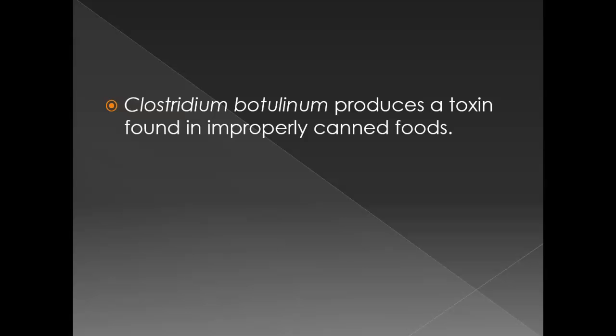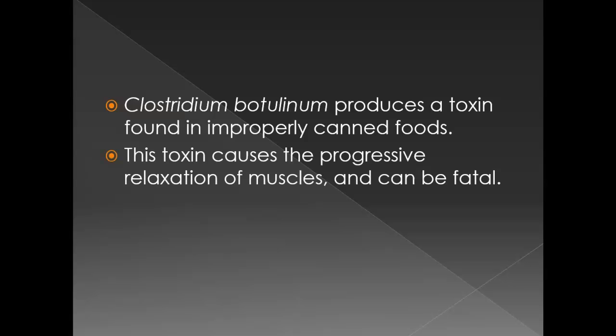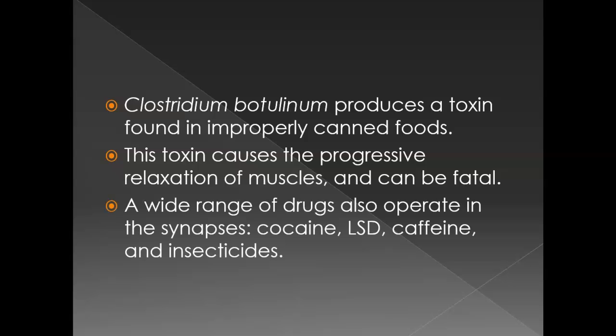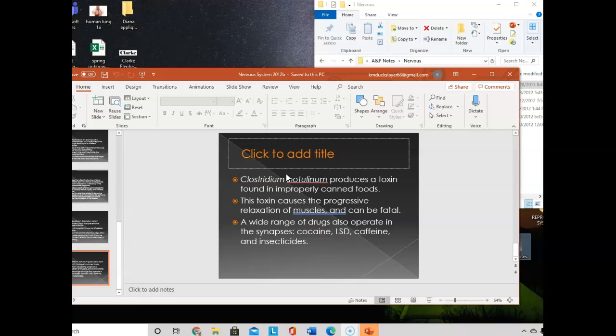Its cousin, Clostridium botulinum, produces a toxin that goes in and prevents the release of acetylcholine. If you can't release that, you can't get muscles to contract. This is found in foods and gets into the body, affecting the smooth muscles of the stomach and intestines. The muscles can't work and can't move food through the intestinal system, and then bad things happen. Other drugs that have been studied also work on the synapses — cocaine, LSD, caffeine — they all work at the synaptic level.